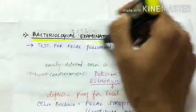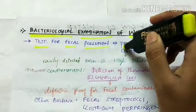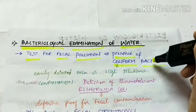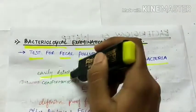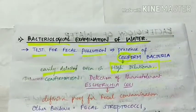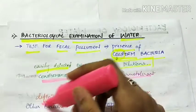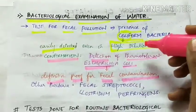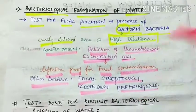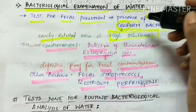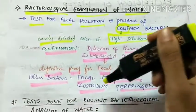For bacteriological examination of water, water is tested for fecal pollution by detecting the presence of coliform bacteria. Coliform bacteria are those present in the human intestine — 'coliform' stands for colon. Detection is confirmed by thermotolerant Escherichia coli, which is definitive proof of fecal contamination. Other indicator bacteria include fecal streptococci and Clostridium perfringens.